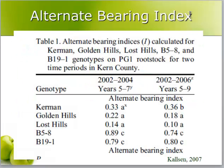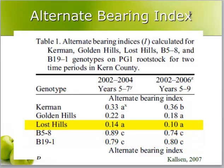The alternate bearing index can be used as a tool to select or reject cultivars. Here in this table, B5-8 and B19-1 have very high indices and have been culled from the breeding program, whereas Lost Hills has a very low alternate bearing index.